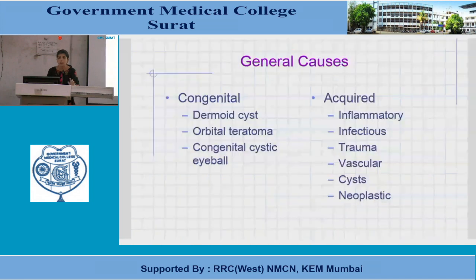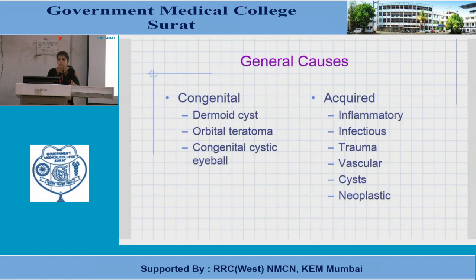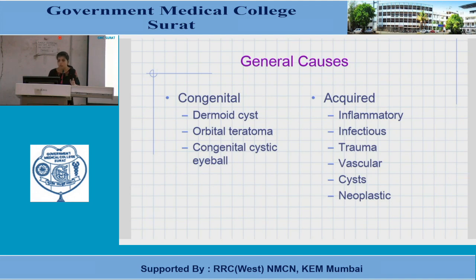Causes are divided into congenital and acquired. In congenital, there might be dermoid cysts, teratoma, or congenital cystic eyeball. Acquired causes are more common and include inflammatory, infectious, traumatic, vascular, cystic, and neoplastic causes.